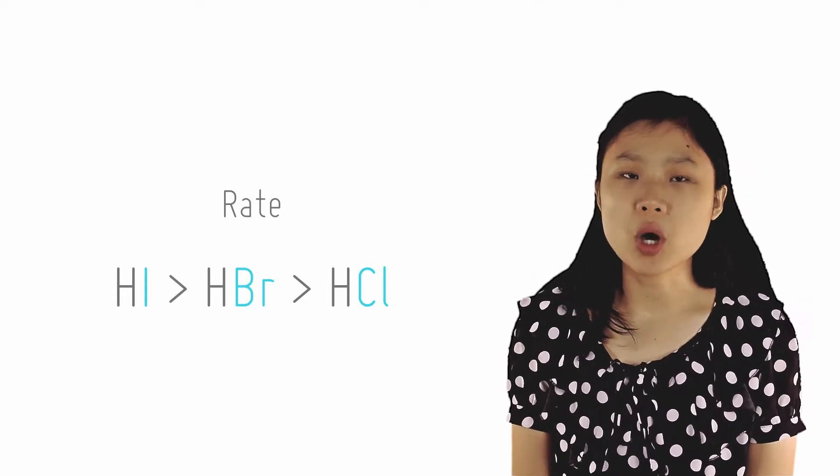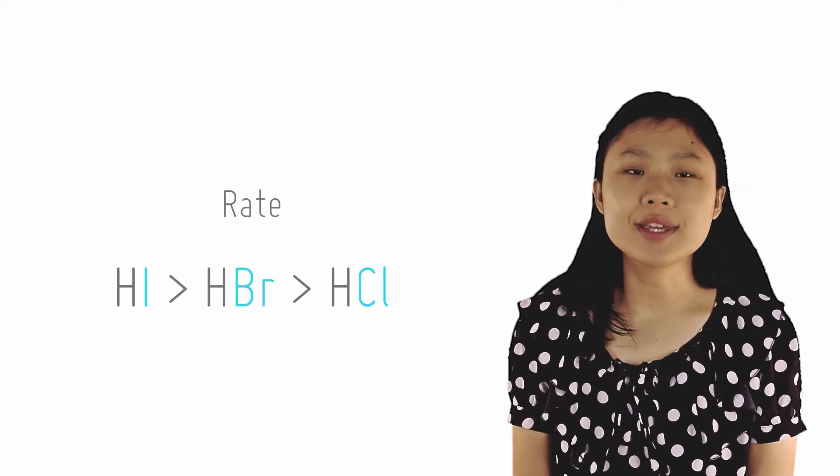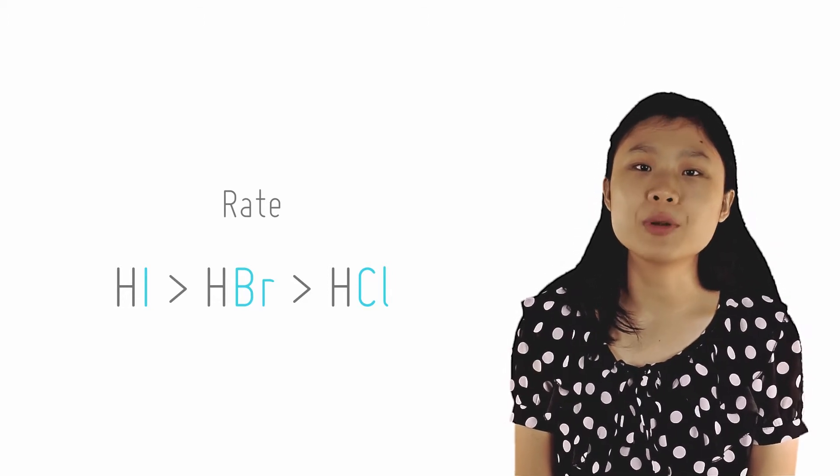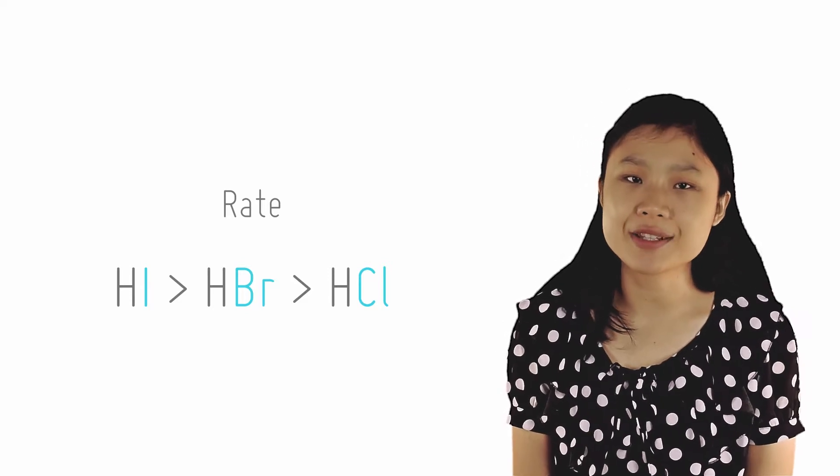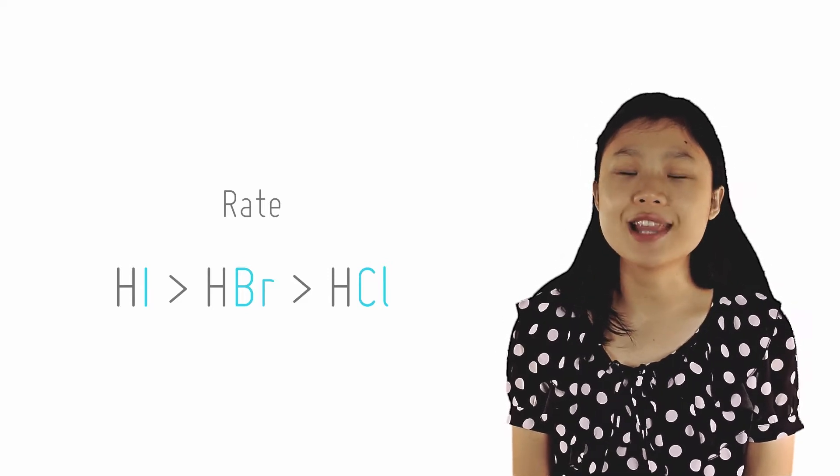We also need to remember Markovnikov's rule. So when the alkene is not symmetrical, the hydrogen will be added to the carbon which is already bonded to more hydrogen atoms and the halogen to the carbon with less hydrogen atoms.